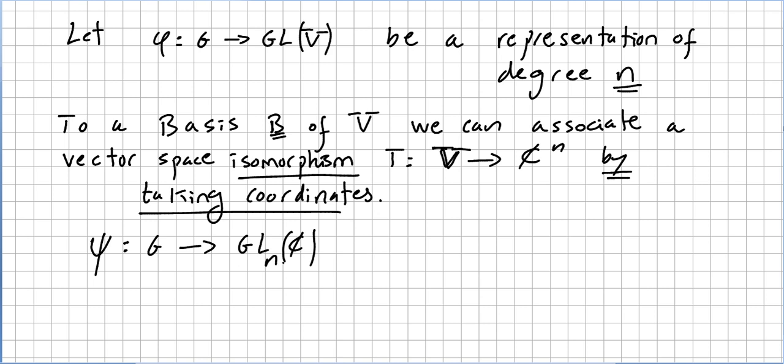And we can do that by setting that the ψ of g—check this notation, the previous videos—I'm going to write it like this: φ of g, T, this T here. This isomorphism, T inverse. Of course this g will be obviously in the group.